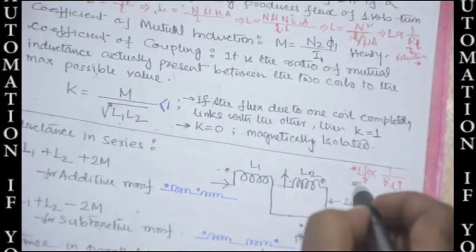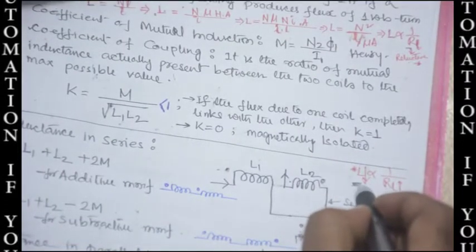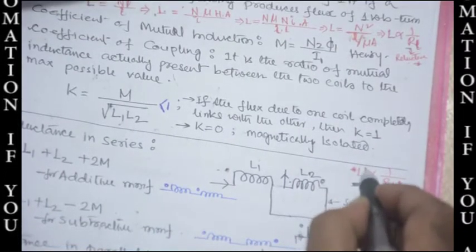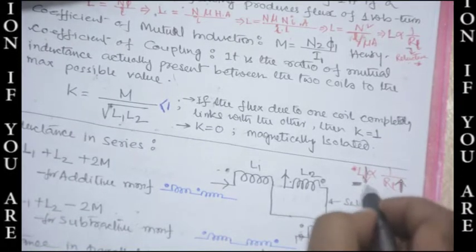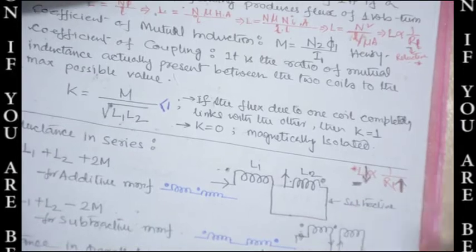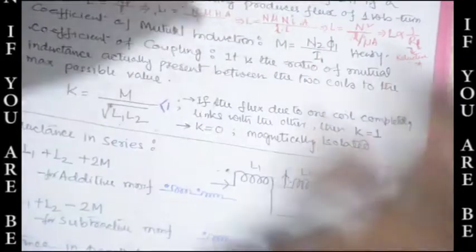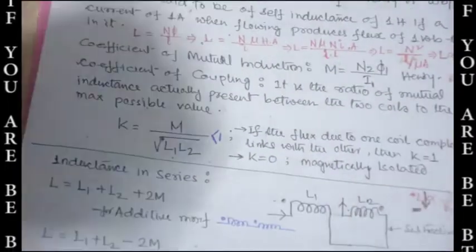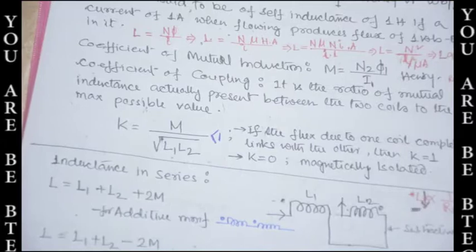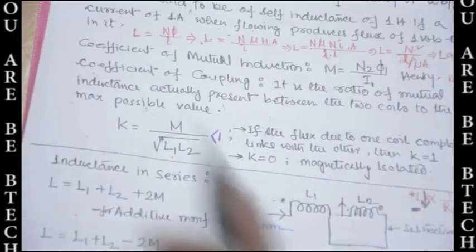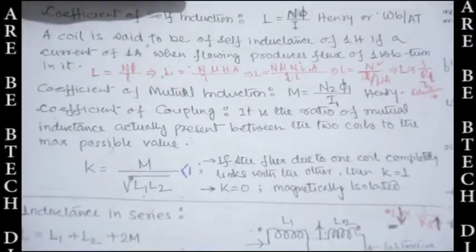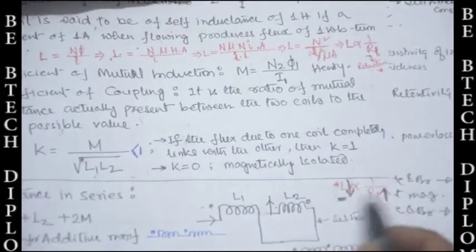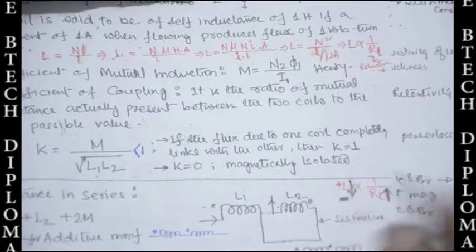Inductance — also called coefficient of self induction — is inversely proportional to the reluctance. So if you need to compare circuits to determine which has greater or lesser inductance, compare the reluctance instead. If reluctance increases, inductance decreases.